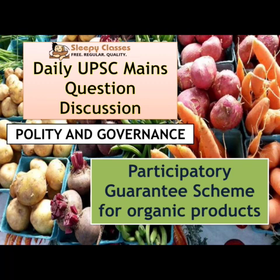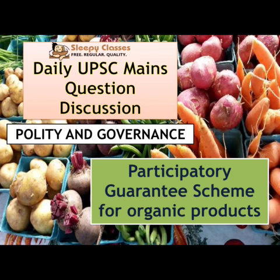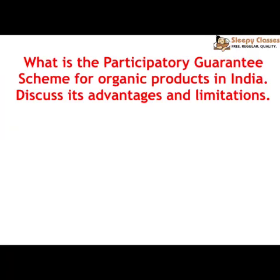It is also related to economics, Indian economy, and your agriculture and food processing sector. So this is a question which can come anywhere. The question is: what is the Participatory Guarantee Scheme for Organic Products in India? Second, discuss its advantages as well as limitations. Structurally you will start by talking about what the PGS is and what it does for organic products, then move on to its advantages and limitations.